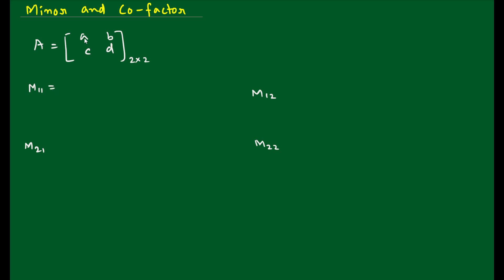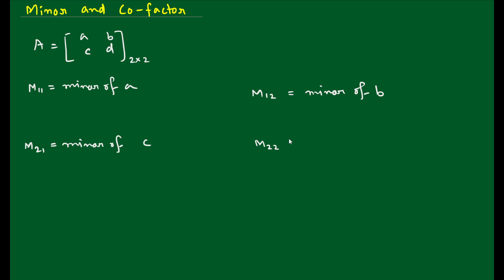What is M11? M11 is the minor of element A. To find the minor of A, since A is in the first row and first column, we delete the first row and first column. After deleting, we are left with only element D. So M11 equals D.